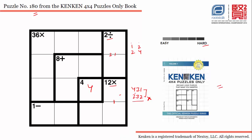Now we are left with the option 4×3×1 only. And 4 is already there in this row as well as in this column, so the only place for 4 is this cell. Now we are left with 3 and 1.